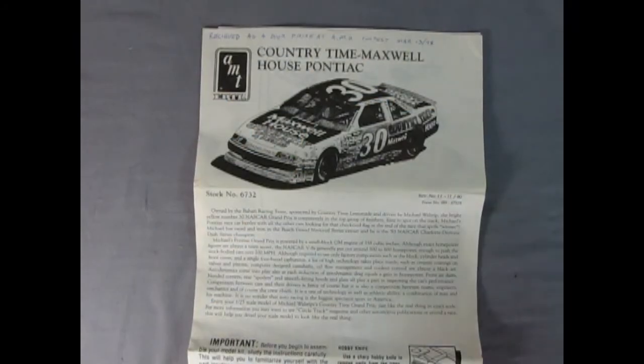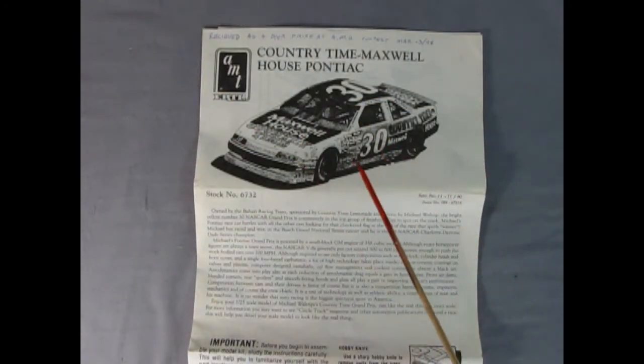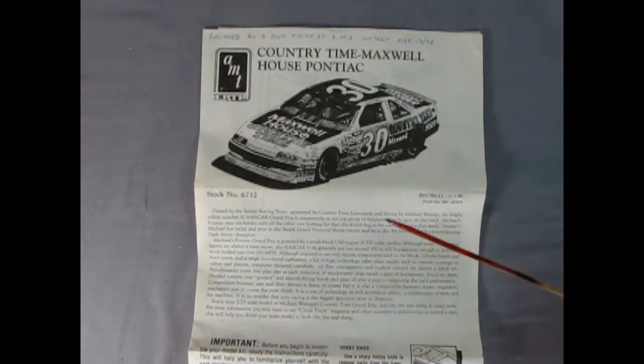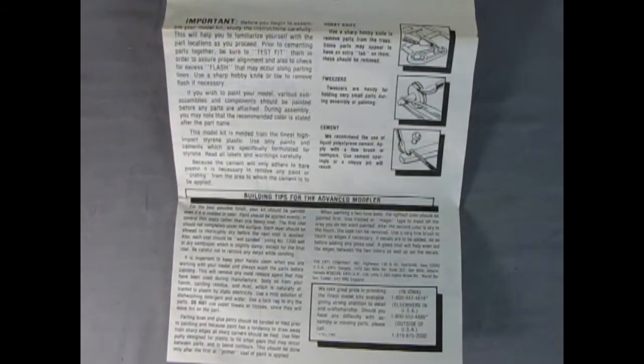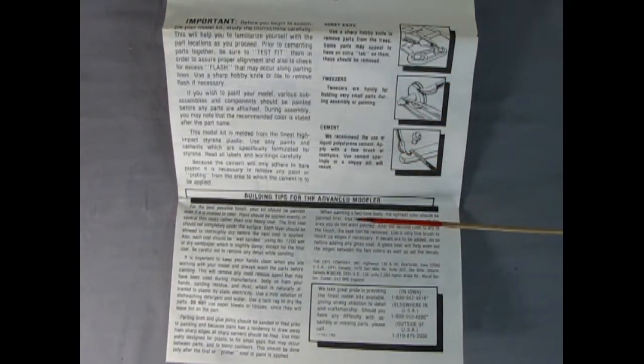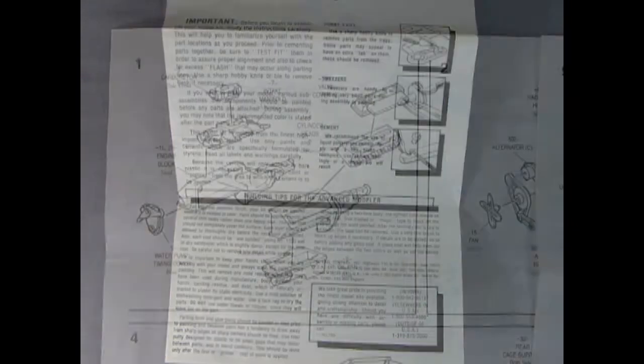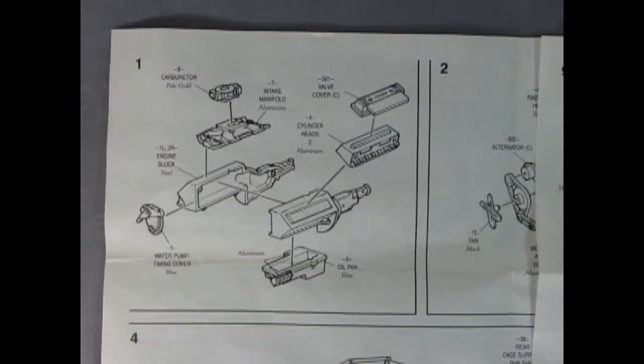So here we have our Countrytime Maxwell House Pontiac. Maxwell House, hmm good to the last drop. As you can see here we've got a big write-up on the whole car, its history and everything else that's cool about it. And on the lower part of the instructions we get to see all the tools that we're gonna need and the building tips for the Advanced Modeler. Now the panels on this instruction sheet are nice and big so even if you have difficulty seeing, it's easy to see all the parts that are in here.